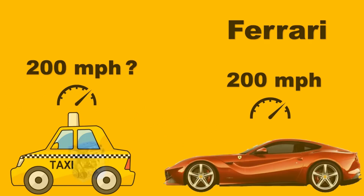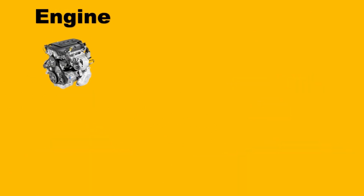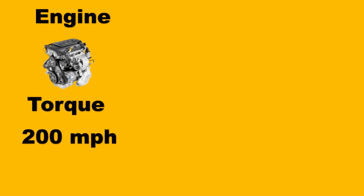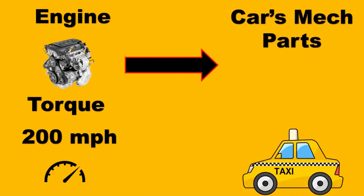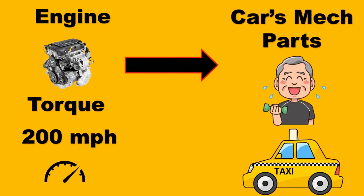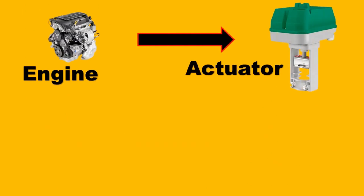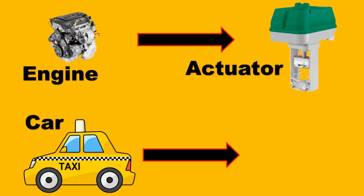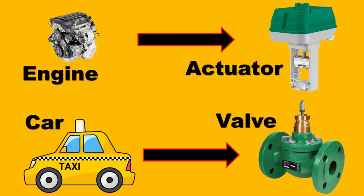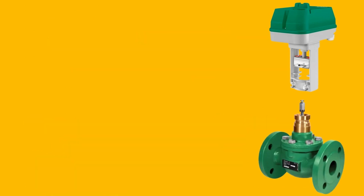The answer is that the engine can deliver the torque equivalent to 200 miles per hour because it is still the Ferrari's engine, but the mechanical parts of the car will not be able to sustain it because they are too old. Now, what does this have to do with the valve? The engine can be clearly compared to the actuator, and the car — especially its mechanical parts — can be compared to the valve.